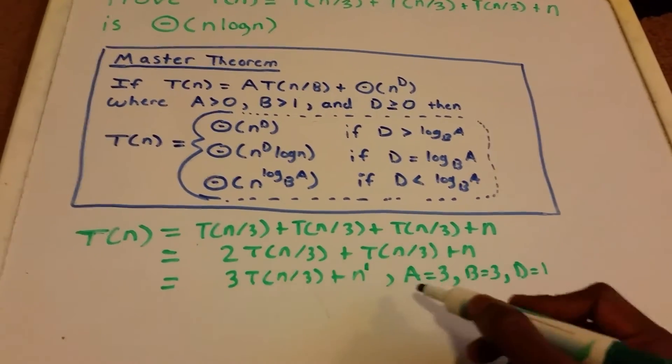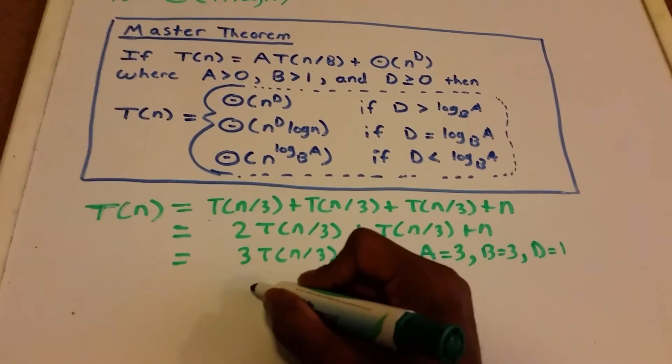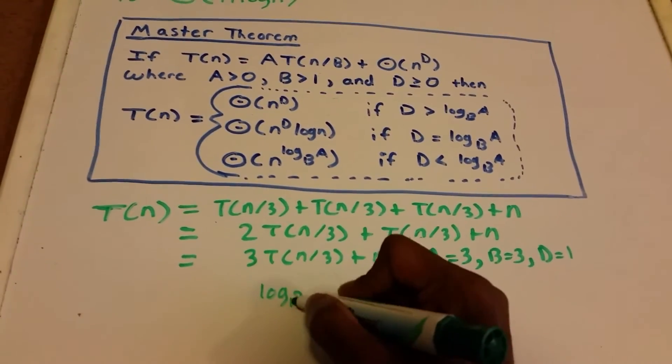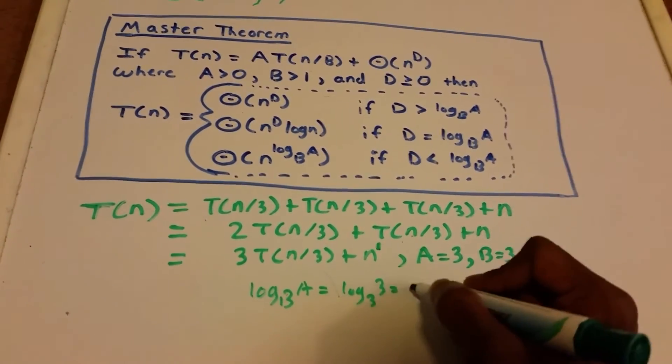Now we have our three values. Let's compute log base b of a, which equals log_3(3) = 1.